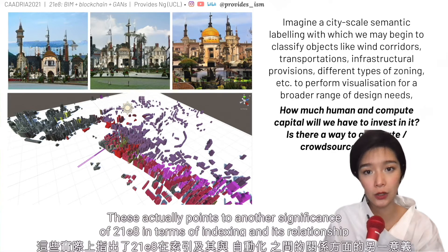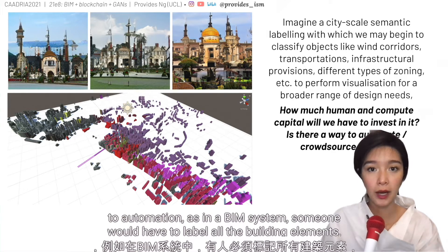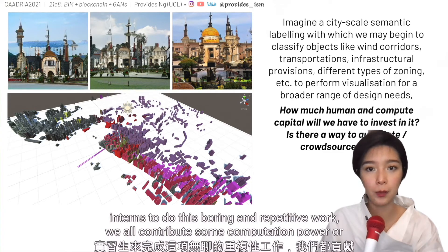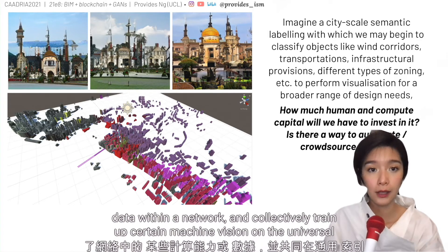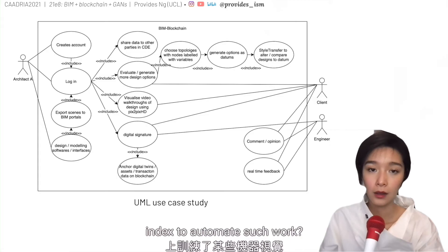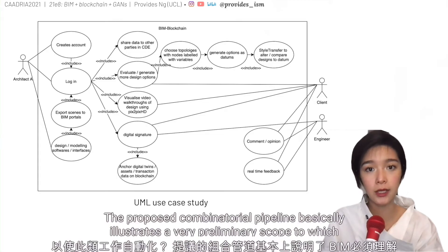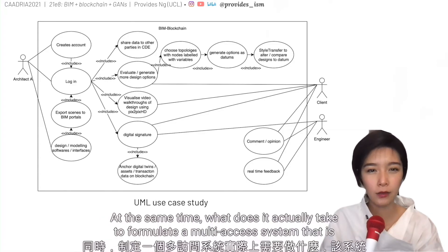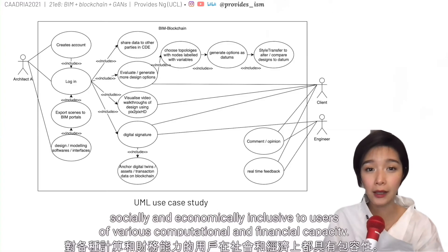This actually points to another significance of 21E8 in terms of decentralized indexing and its relationship to automation. In a BIM system, someone would have to label all the building elements. Is there a way we can crowdsource these efforts with a universal index — where instead of having interns do repetitive work, we all contribute some computation power or data within a network and collectively train machine vision on the universal index to automate such work? The proposed combinatorial pipeline illustrates a very preliminary scope to which BIM has to comprehend to diversify and benefit user interaction in the face of AI, and what it takes to formulate a multi-access system that is socially and economically inclusive to users of various computational and financial capacity.